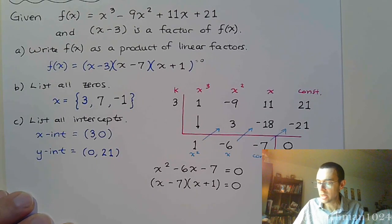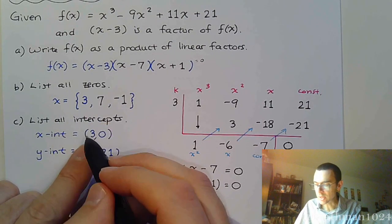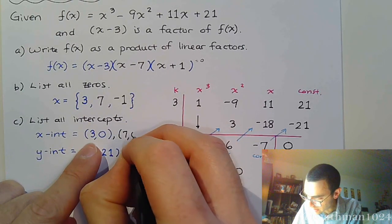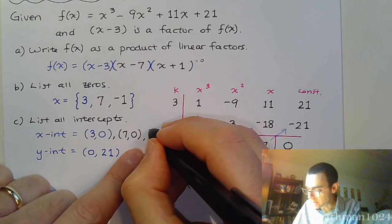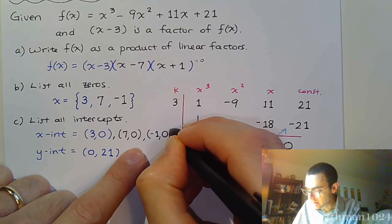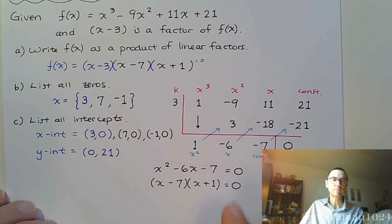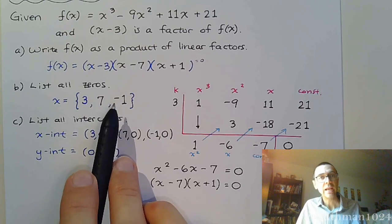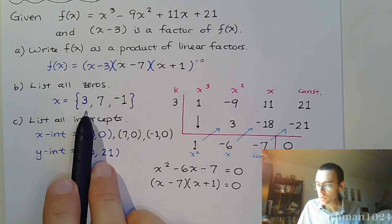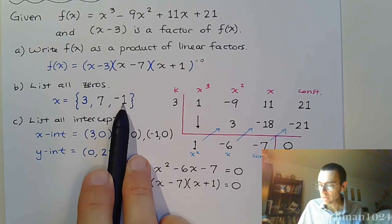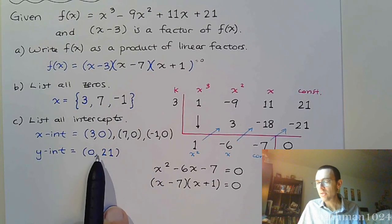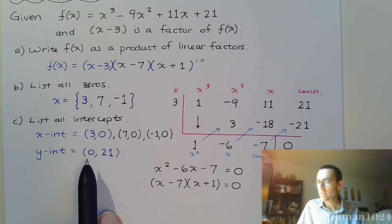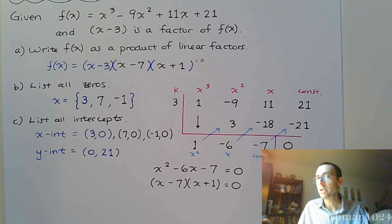To finish answering all the questions: 3 corresponds to x-intercept (3, 0); 7 corresponds to x-intercept (7, 0); and negative 1 corresponds to x-intercept (−1, 0). For this problem, we found all three factors, all three zeros, and since all three zeros were real, each one corresponded to an x-intercept. And of course, there was the y-intercept, which we are always going to have for a polynomial function. Stick around and let's see if these problems get any more difficult.